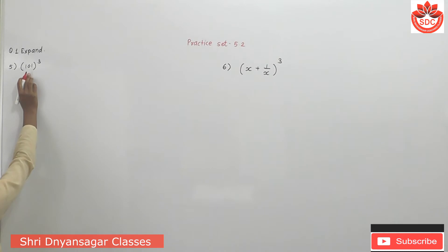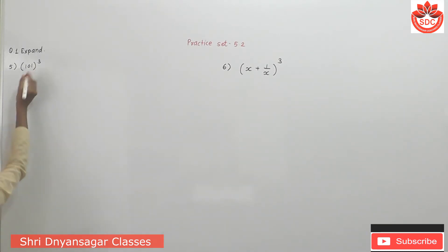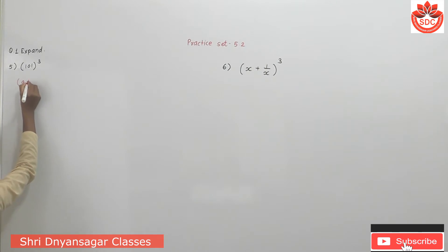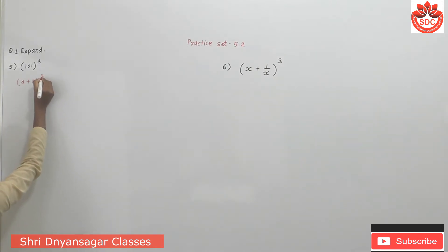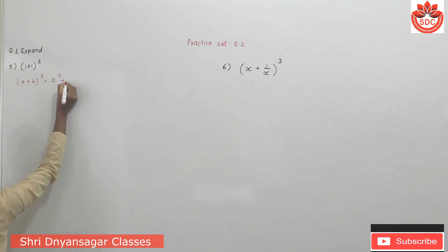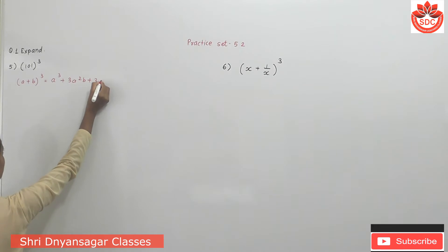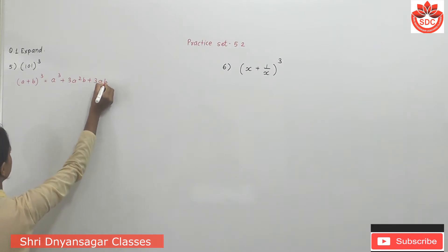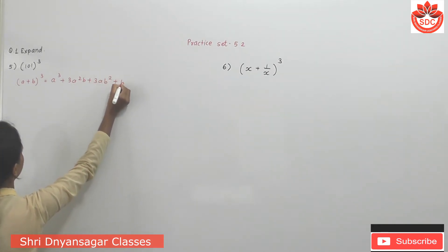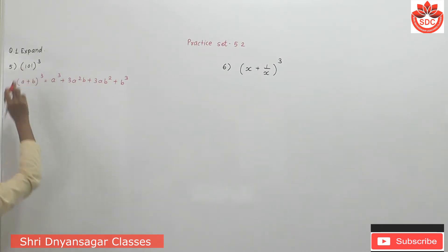Now expand according to the formula from the previous video. The formula (a + b)³ is equal to a³ + 3a²b + 3ab² + b³. The formula is for 100 and 3 bracket — now expand.